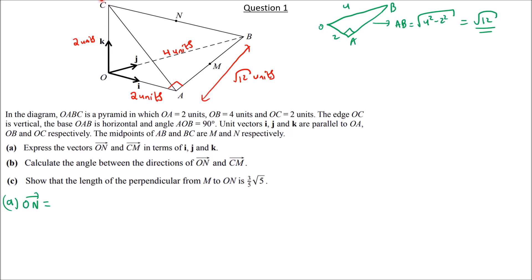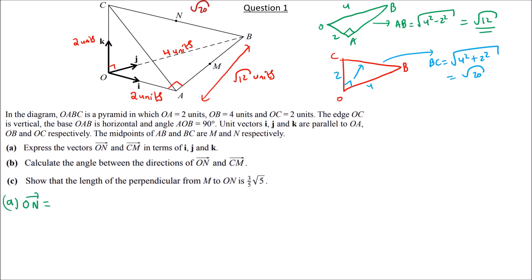We draw triangle OBC where OC is 2 units and OB is 4 units, and they are perpendicular. Using Pythagoras' theorem, BC equals positive square root of 4² + 2² = square root of 20 units.